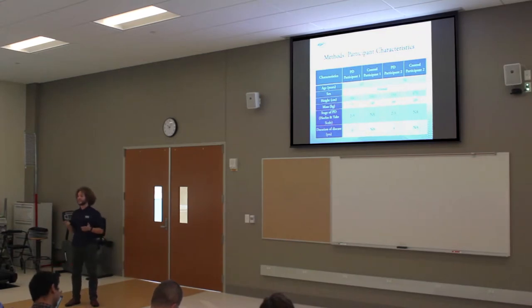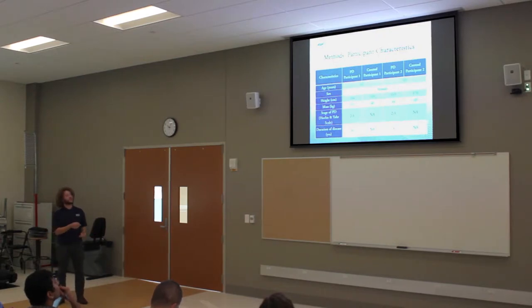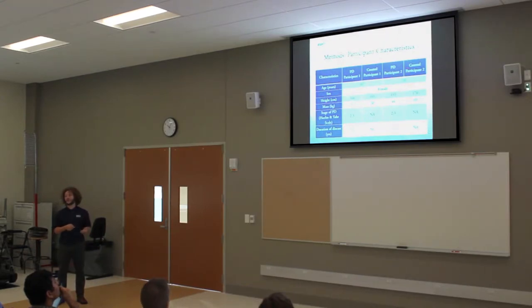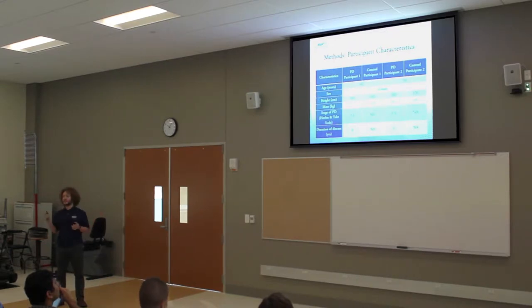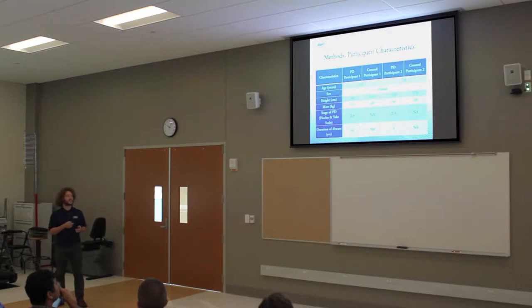This was a case study with only four participants. The first two participants were pair one — both 67 years old — and the second pair were 70. They were all females. We recorded their height, mass, stage of Parkinson's disease using the Hoehn and Yahr scale, and how long they'd had the disease. Each of the individuals were in the two-to-three range, which represents mild to moderate severity.